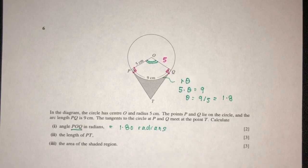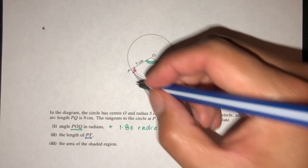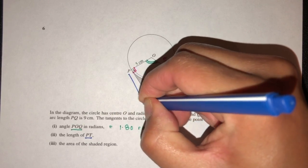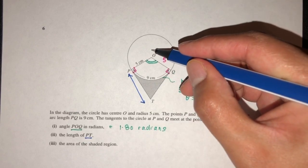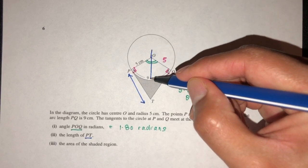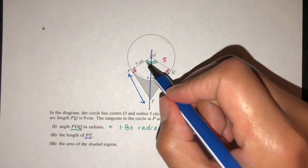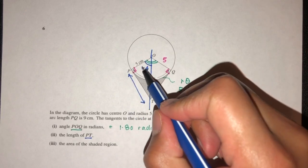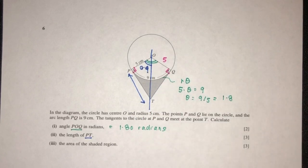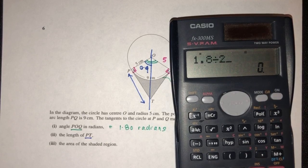For part 2, we have to find the length PT. We can break this down into two halves. Each half angle will be 0.9, because the whole angle is 1.8, so 1.8 divided by 2 is 0.9.